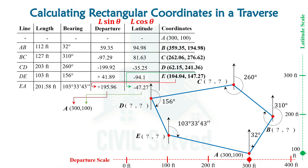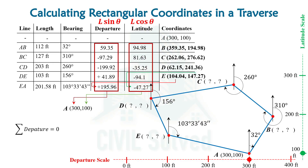It means the net displacement is zero. In other words, if I add all the values of the departure, the summation would be coming out to be zero, because the movement in the rightward direction is equal to the movement in the leftward direction. Similarly, if I add all the values of the latitudes in a closed traverse, the summation will also be coming out to be zero.